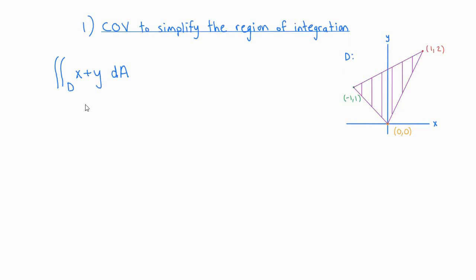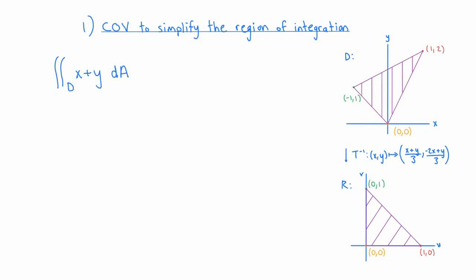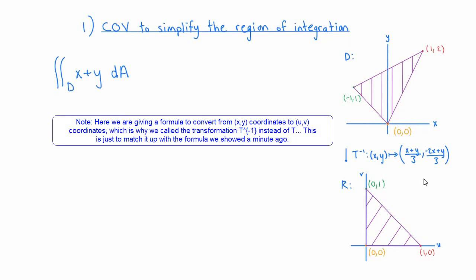This double integral is not too bad and you could actually evaluate it without making a change of variables. The only small issue is that the region of integration is a little bit awkward to describe as either a type one region or a type two region. That's just because whichever way you look at the region — either going from the bottom to the top or going from the left to the right — the definitions of the functions bounding the region change at some point in between the endpoints. That's not an insurmountable difficulty, but it turns out to be a little bit easier to integrate this function if we first make a change of variables. In this case it makes sense to make a linear change of variables to uv coordinates where u and v are given by x plus y over 3, and negative 2x plus y over 3.